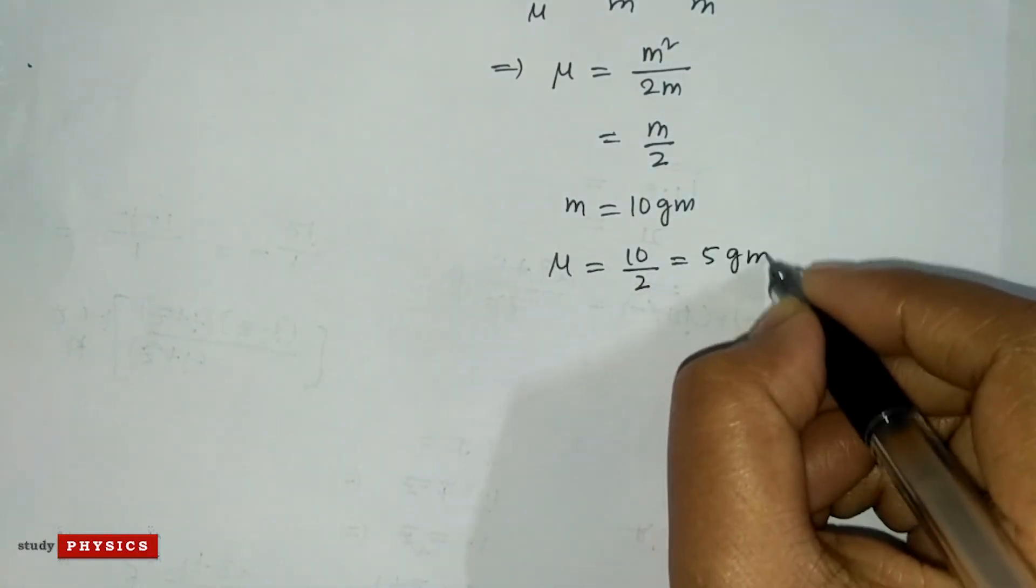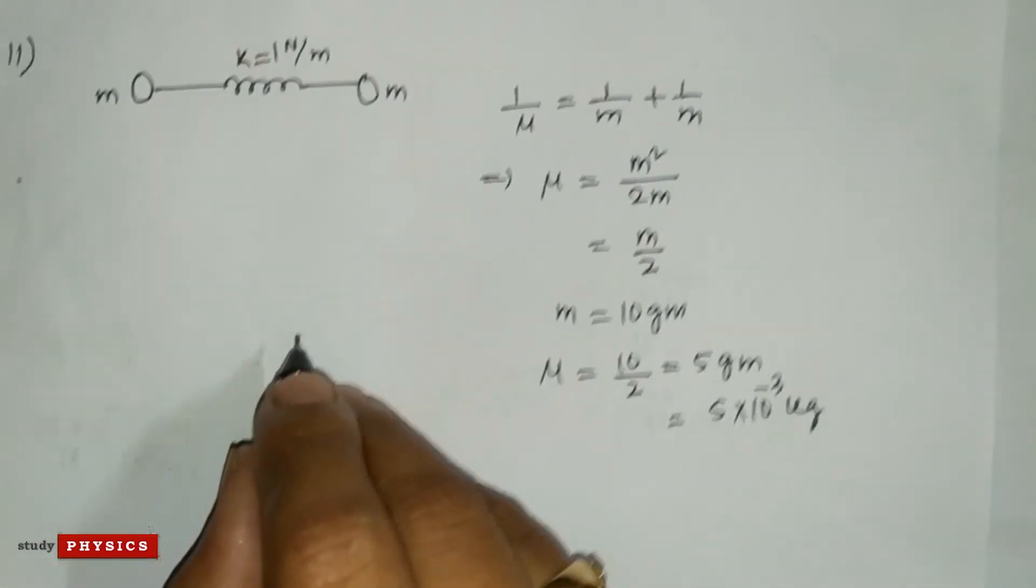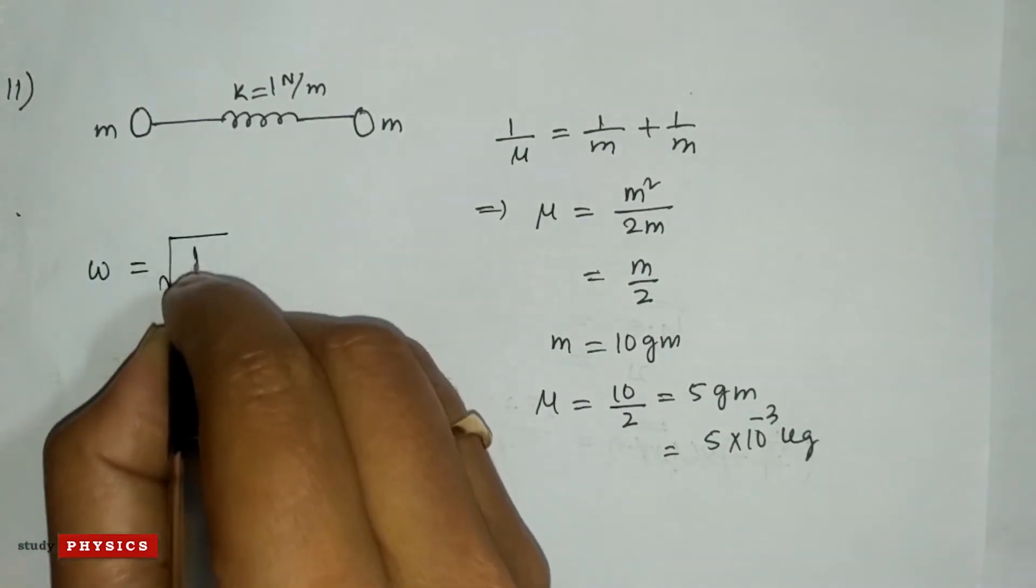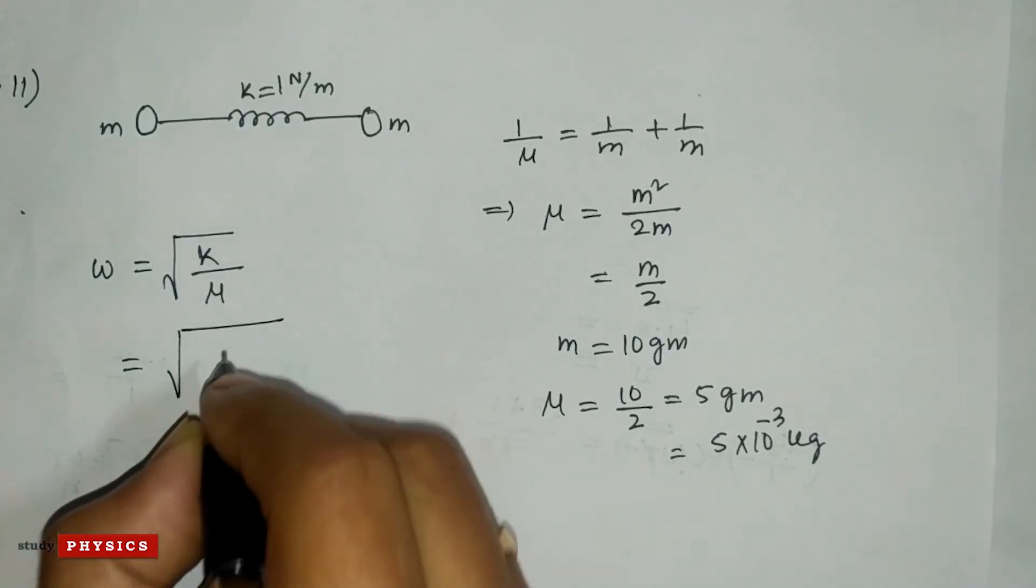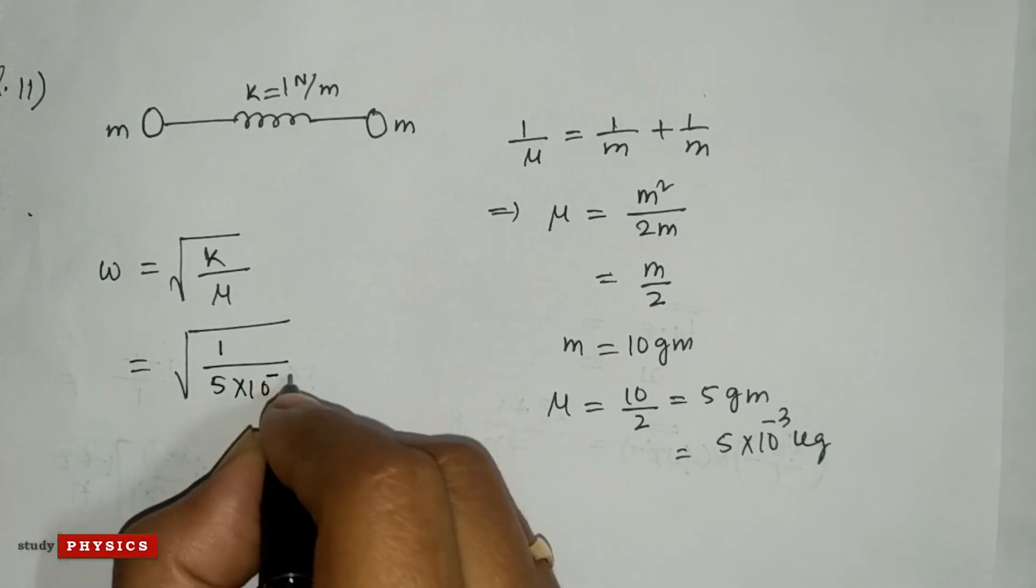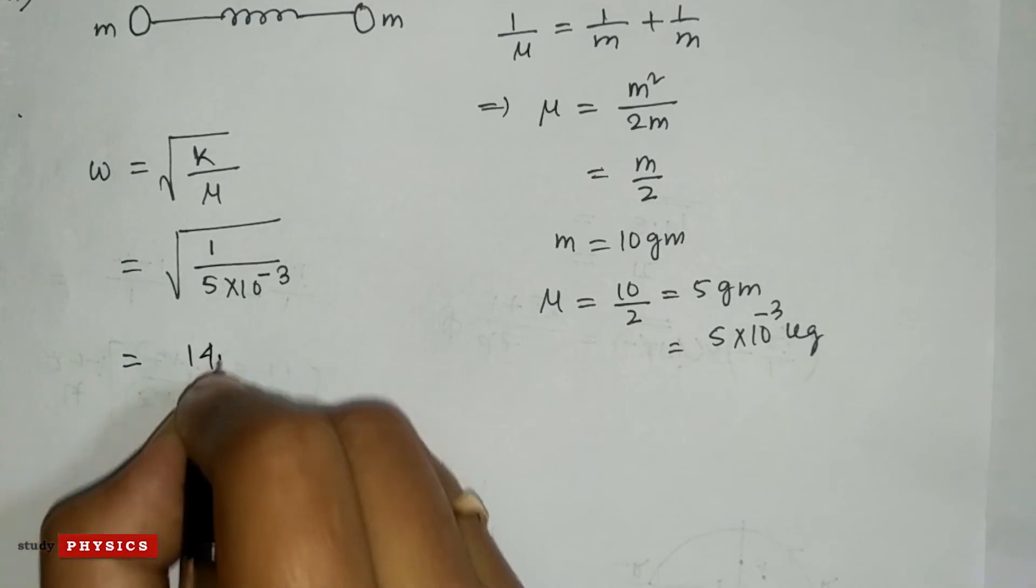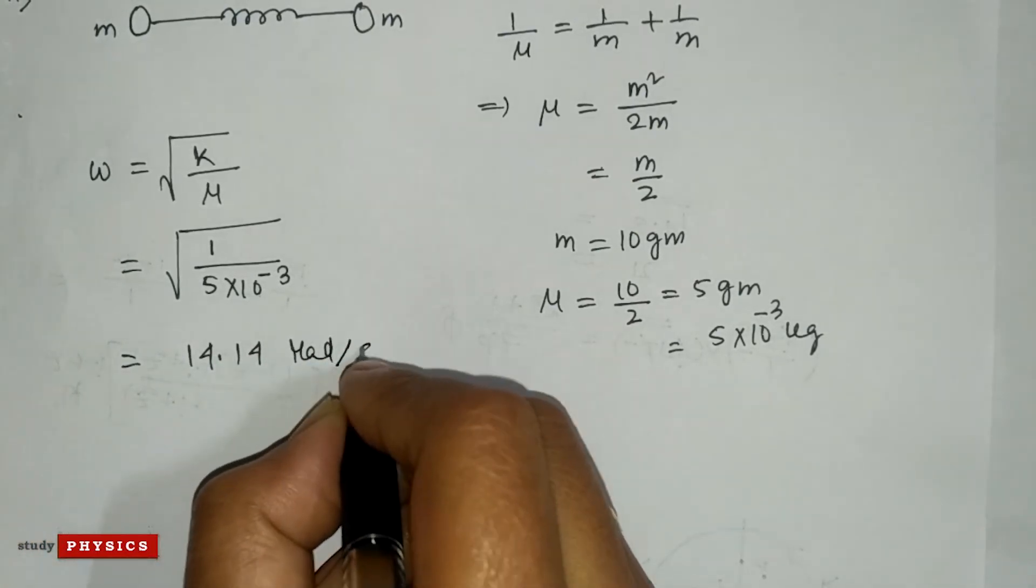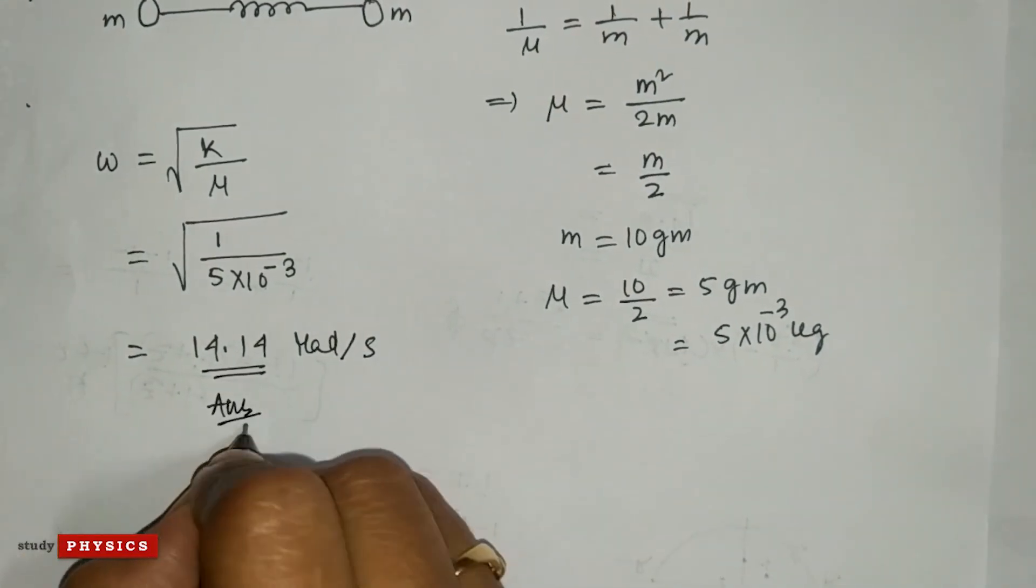That's 5 grams, which is 5 × 10^-3 kg. Now the angular frequency ω = √(k/μ). We know k = 1 N/m and μ = 5 × 10^-3 kg. After calculating, this value will be 14.14 radians per second. So the answer is 14.14.